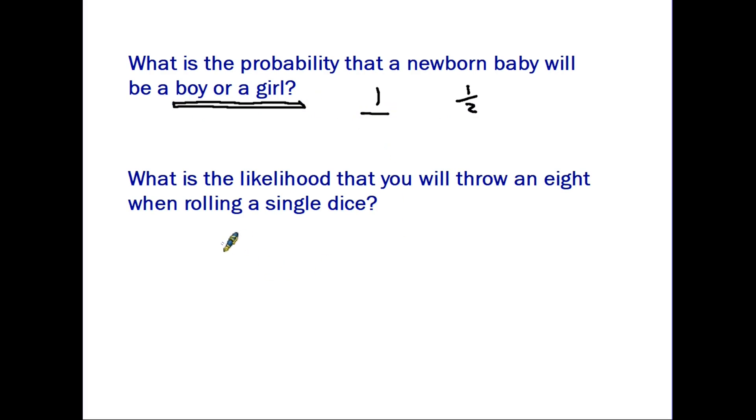And then the second one which may seem a little more obvious. What is the likelihood that you will throw an eight when rolling a single dice? Well a dice does not have an eight. Therefore there is no chance that you will roll an eight. Therefore the probability is zero. I have seen many times the answer very unlikely given for this scenario. Please be absolutely clear with your definition. If it's impossible it is a zero probability.